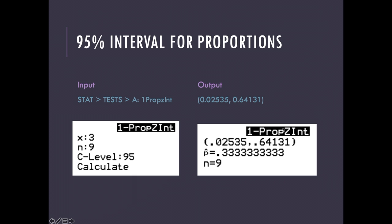Sometimes the calculator will give a negative answer for the minimum or a value of more than one for the maximum — that's not actually possible for proportions. If that happens, you should correct your answer: if you have a negative minimum, change it to 0, because proportions and probability always have to be between 0 and 1. Likewise, if the calculator outputs more than 1, your actual answer should be 1. For proportions, always remember they must be between 0 and 1.